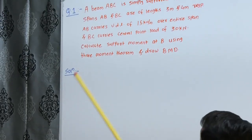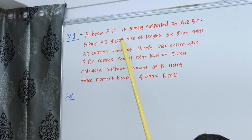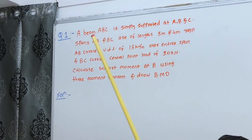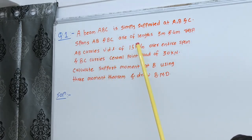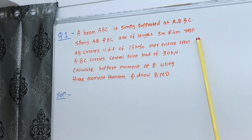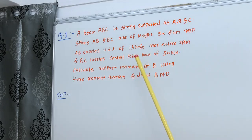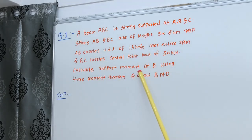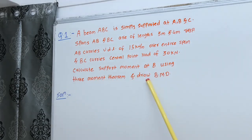The problem: a beam ABC is simply supported at A, B, and C. Spans AB and BC are of lengths 3 meters and 4 meters respectively. AB carries a UDL of 15 kilonewton per meter over the entire span, and BC carries a central point load of 30 kilonewton. Calculate support moments at B using the three moment theorem and draw the bending moment diagram.